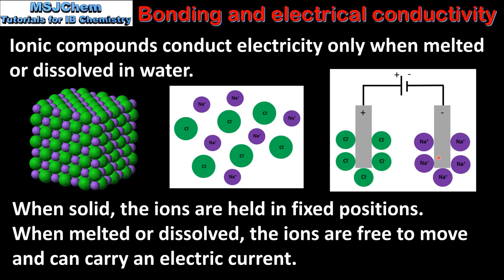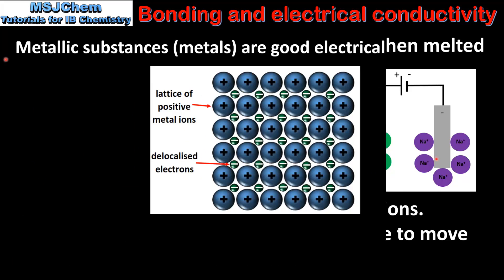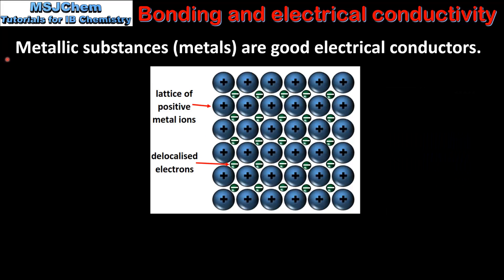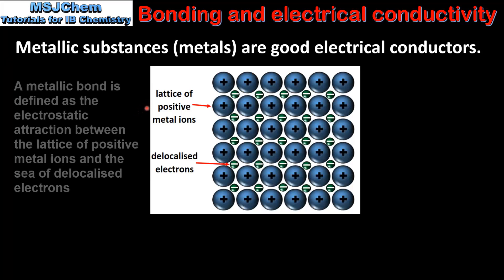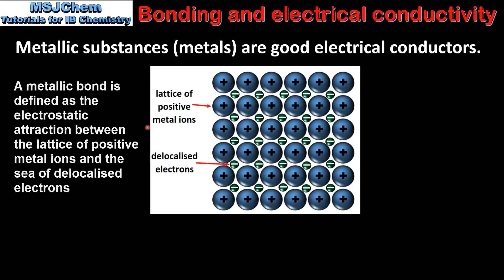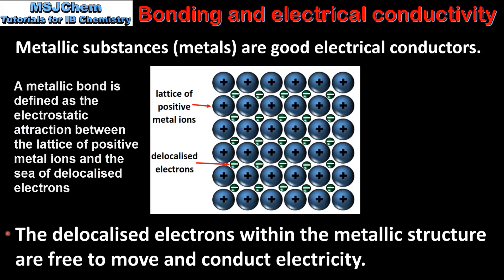The electrolytic cell will be covered in more detail in topic 9. Next, metallic substances or metals are good electrical conductors. The metallic structure is made up of a lattice of positive metal ions in a sea of delocalized electrons. The delocalized electrons within the metallic structure are free to move and conduct electricity, which explains why metals are good electrical conductors.